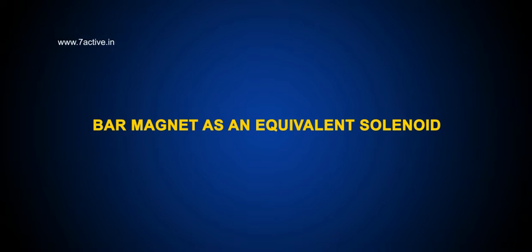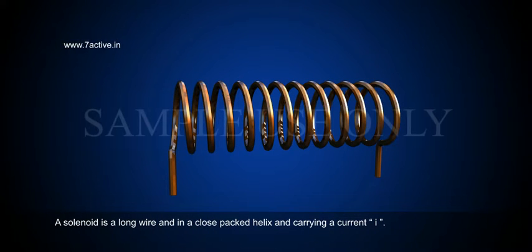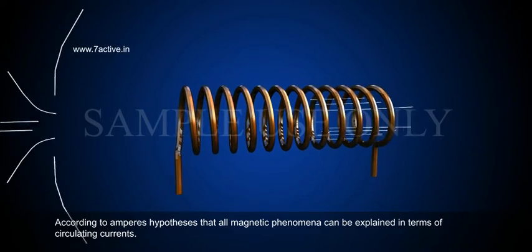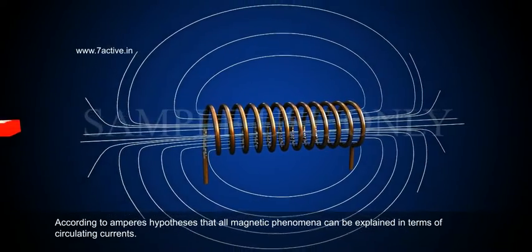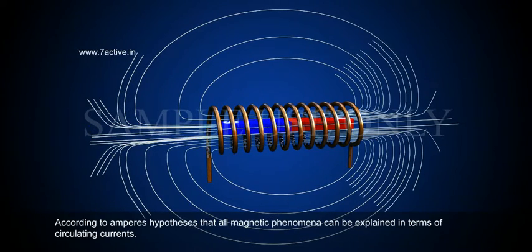A solenoid is a long wire wound in a close-packed helix and carrying a current I. According to Ampere's hypothesis, all magnetic phenomena can be explained in terms of circulating currents.